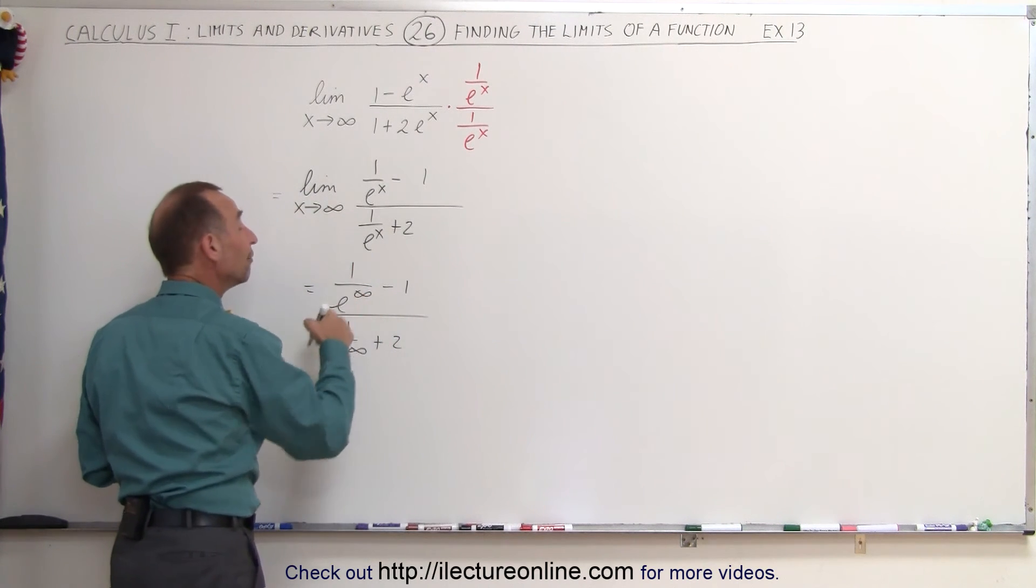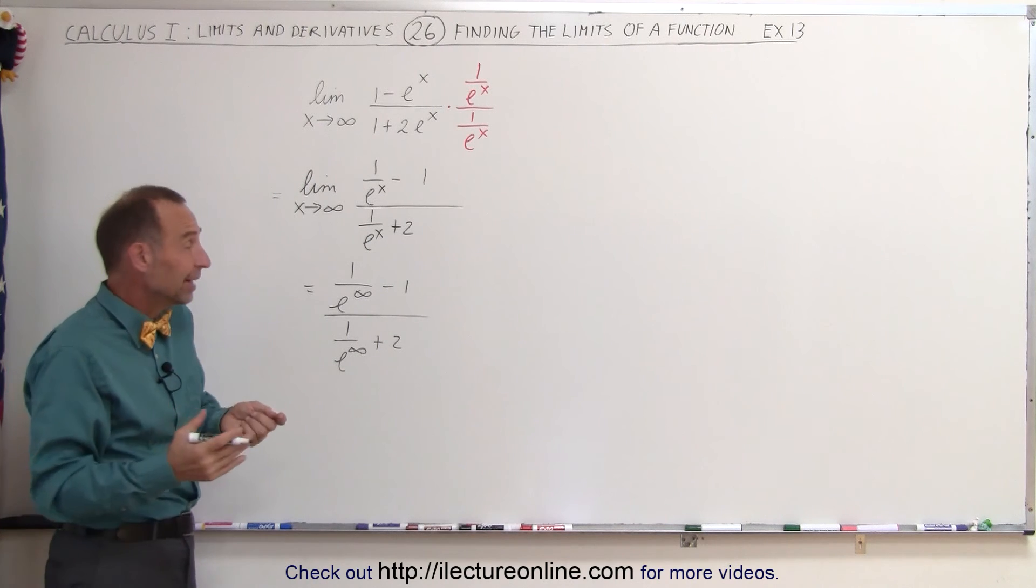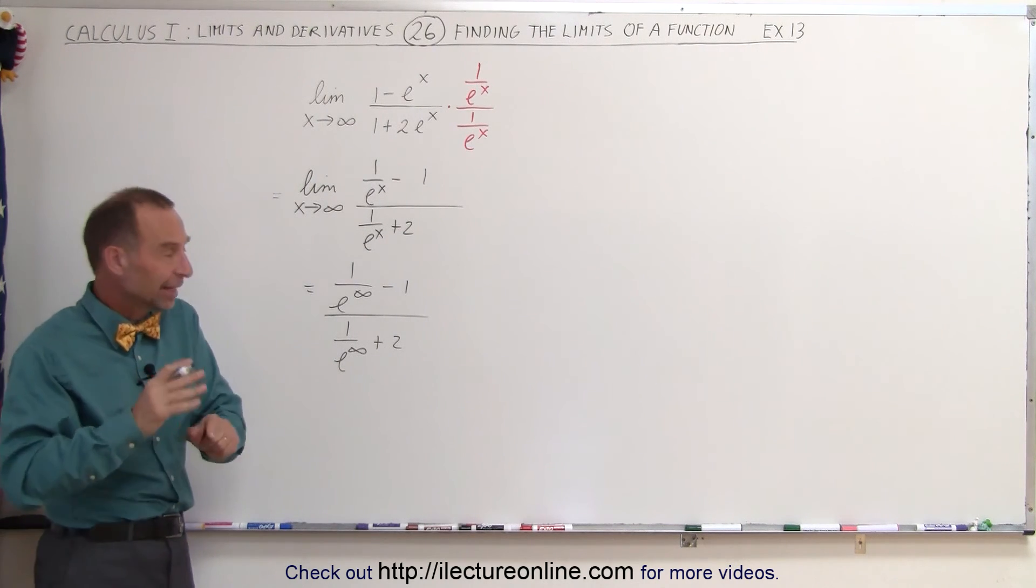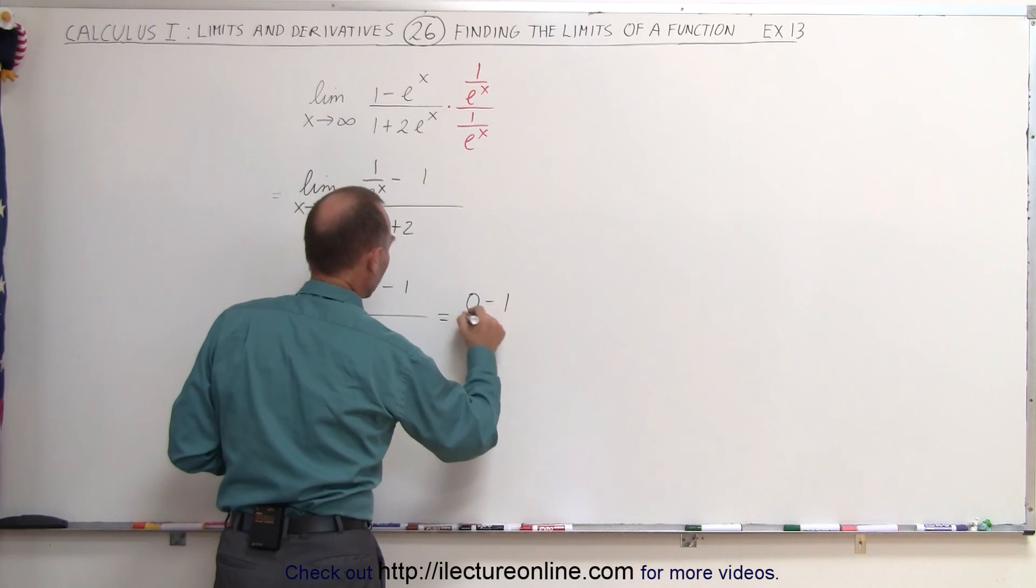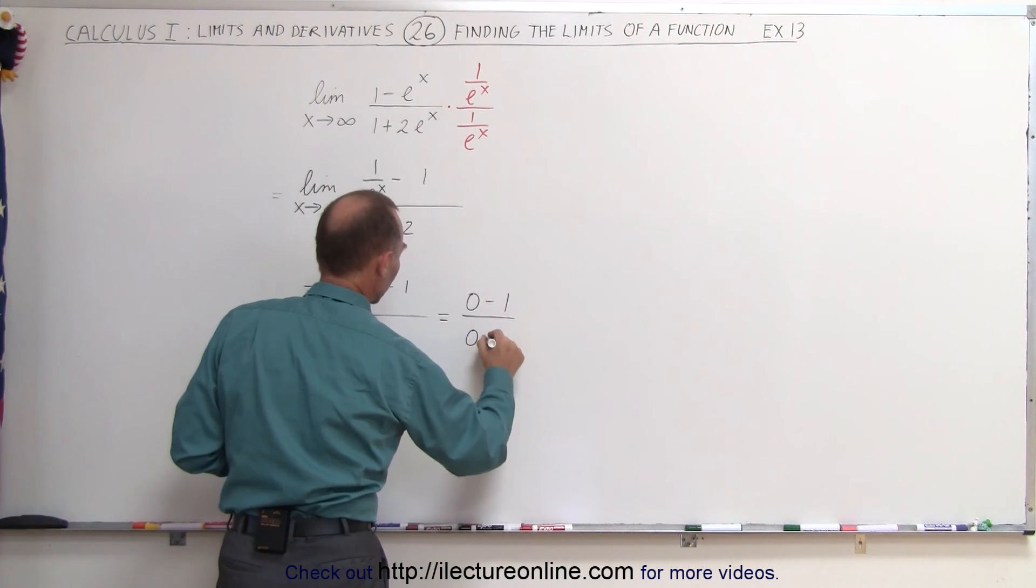Of course, 1 divided by e to the infinity, e to the infinity is still infinity and any number divided by infinity is 0. So this becomes 0 minus 1 divided by 0 plus 2.